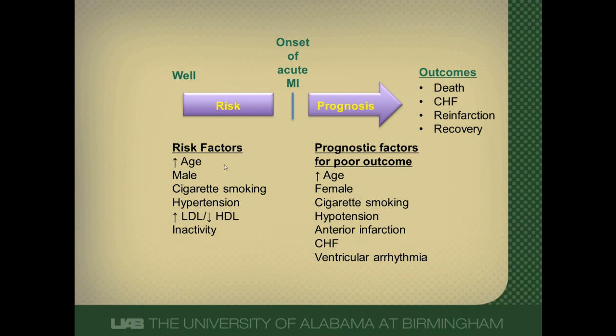Hopefully you can see how risk factors and prognostic factors differ from each other — they interact at different parts of the disease process. Sometimes some factors are both risk factors and prognostic factors, but usually they're very different. Hope this video has helped you understand those differences. If you have any questions, you can contact me on the course website or through the contact section of my blog. Have a great day.